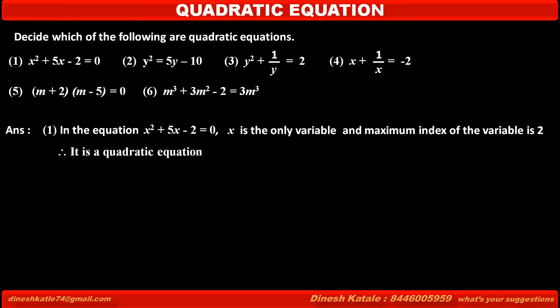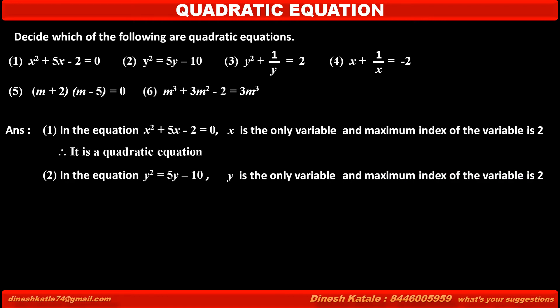Now see the second equation: y squared is equal to 5y minus 10. In this equation, the first term is y squared; on the right-hand side, the second term 5y is given, and also the constant term minus 10. It is clear that y is the only variable, and the maximum index of the variable is 2, meaning the highest power of y is 2. The degree of this equation is 2, so we can say that it is a quadratic equation.